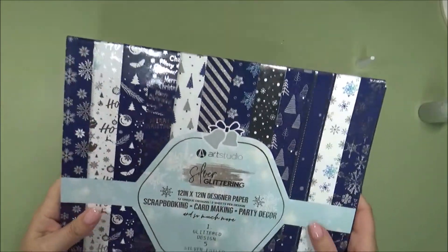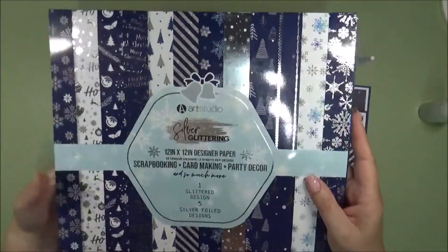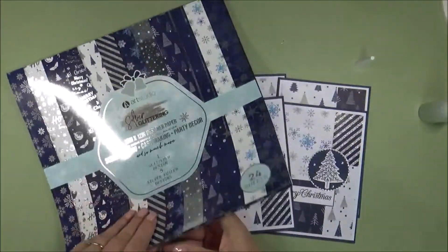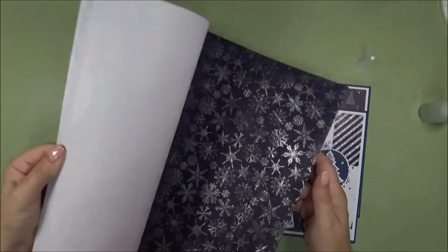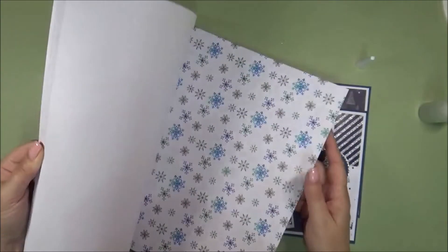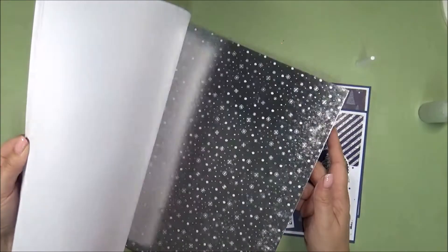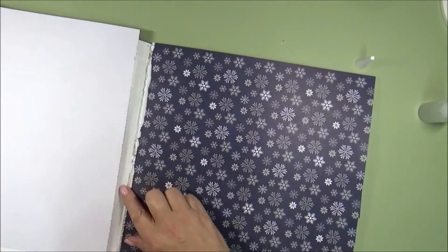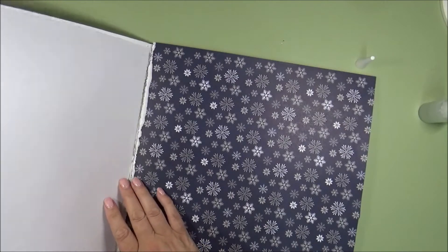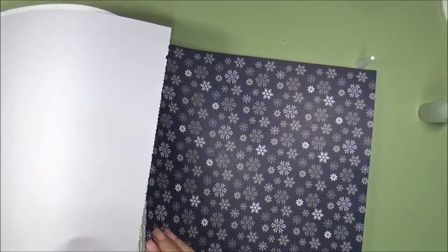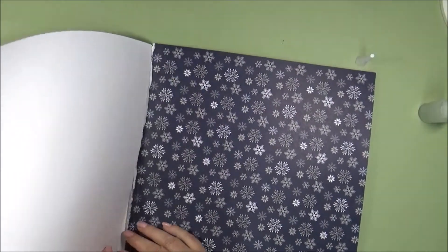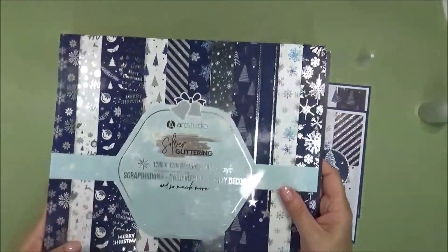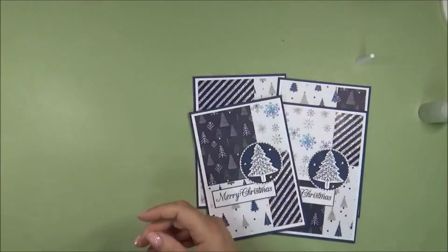I actually just bought them today from the range, it's by Art Studio, and they're just called Silver Glittering. Really lovely papers, some beautiful patterns in there. And I think the only negative is the fact you can't tear them out very well. I've had terrible trouble trying to tear them out, so it might be worth trying to just separate them all. But yeah, I think it was £4 something from the range. So yeah, really lovely pack of papers.